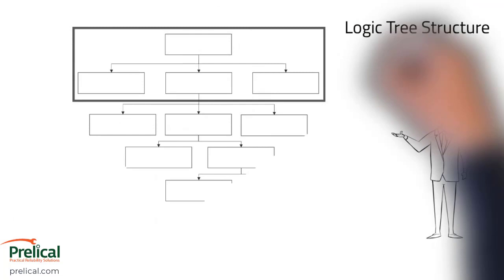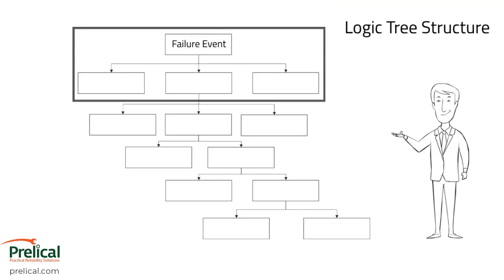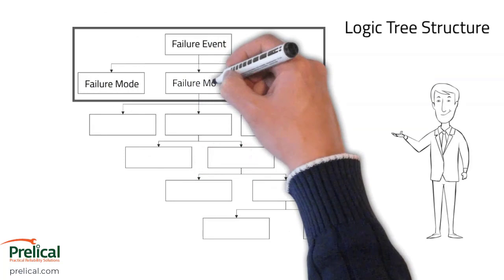The next step when doing a root cause analysis is using some sort of structure to help you and your team work through the problem. I'm going to suggest something called a logic tree. A logic tree helps you think through the problem step by step — it removes the blame game and the 'I think it's this versus I think it's that,' and forces you to use data and analysis to prove or disprove your assumptions.